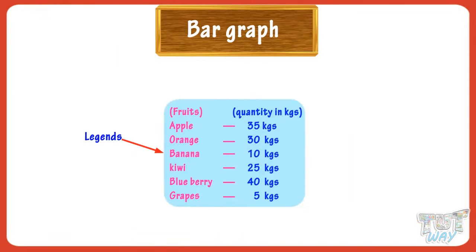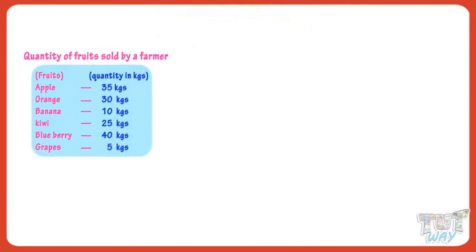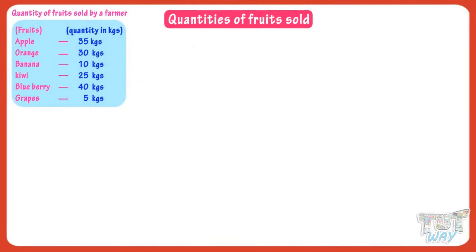Let's learn more about bar graphs using some examples. Here we have some data. A farmer sold different quantities of fruits in a particular month and he recorded the sales. Now we will store this data in the form of a bar graph. First of all, determine what will be the title of our bar graph — like it can be 'Quantities of Fruits Sold.'